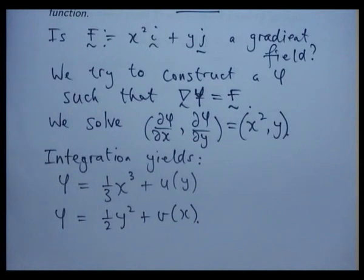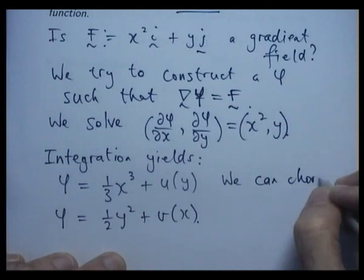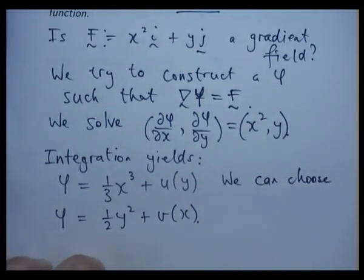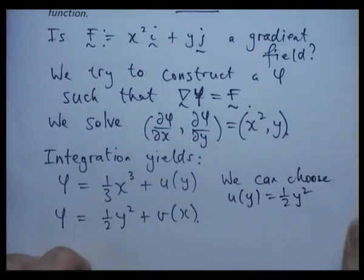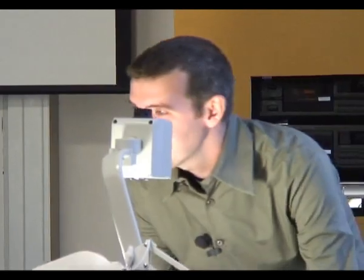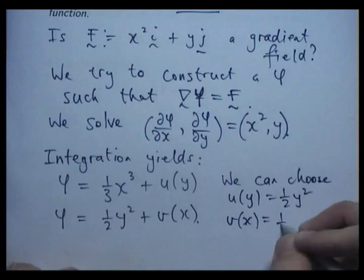So what we would like to do now, if possible, is choose functions u and v such that these two equations are one and the same. Can anyone think of a choice for u? Yep, seems pretty easy. Can anyone think of a different choice? Yes, you can have a constant in there if you really want to. And v of x would be something like one third x cubed.